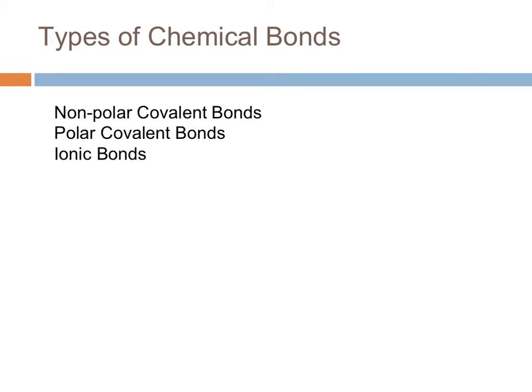In this video we're going to look at how to determine what type of chemical bond you have based on the difference in electronegativity values. There are three types of chemical bonds.